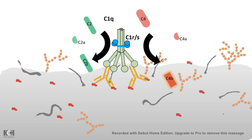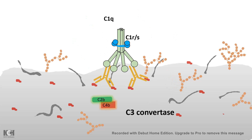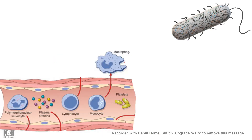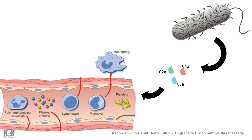C2 can also be converted to C2B and C2A. C2B and C4B together form the C3 convertase, which is very important because it can activate many other complement cascade pathways. C3 convertase cleaves C3 to form C3B and C3A. C3A is an anaphylotoxin. The anaphylotoxins — C2A, C4A, and C3A — can attract macrophages from the bloodstream, allowing extravasation of leukocytes so that macrophages and many other pathogen recognition cells can attack the pathogen.